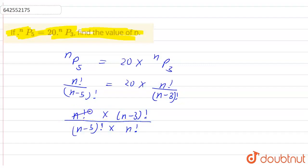N factorial is cancelling out N factorial. And on cancelling out this, we will get N minus 3 into N minus 4 and it is equal to 20.